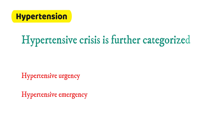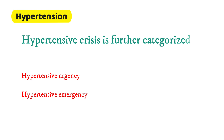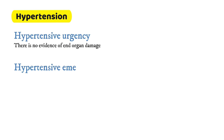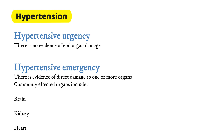Hypertensive crisis is further categorized as hypertensive urgency and hypertensive emergency. In hypertensive urgency there is no evidence of end-organ damage. In hypertensive emergency, there is direct damage to one or more organs. Commonly affected organs include the brain, kidney, or heart, and patients may present with confusion, drowsiness, chest pain, and breathlessness.